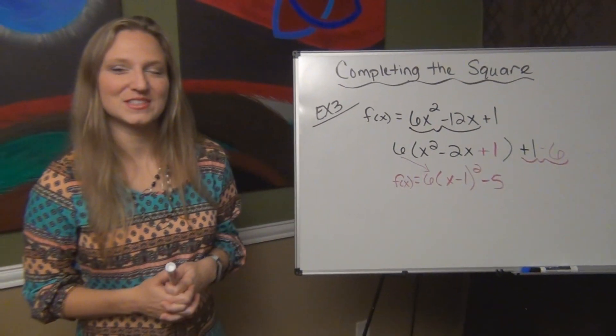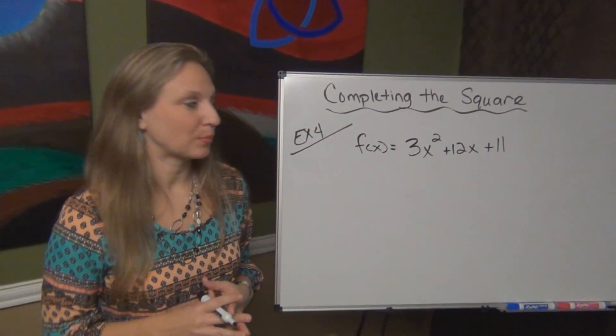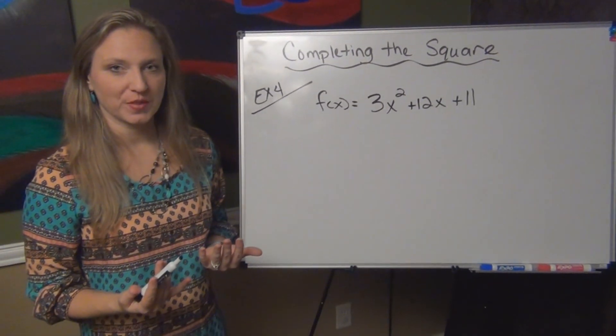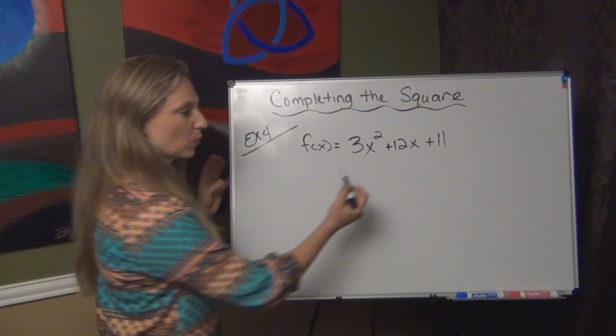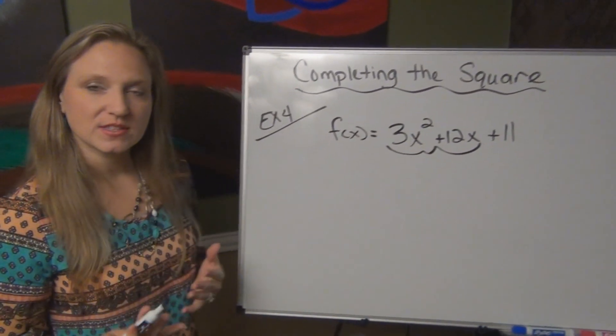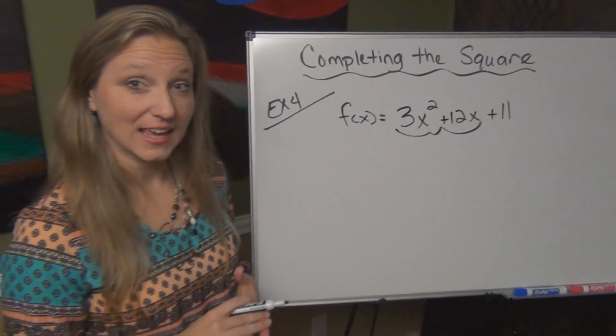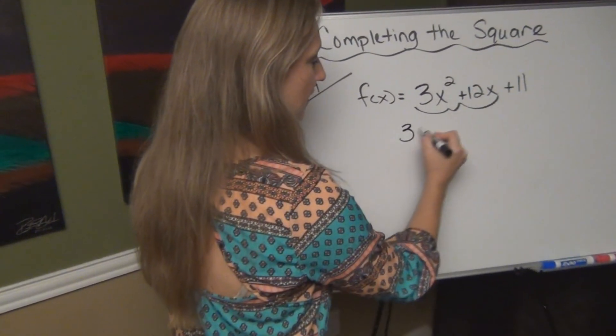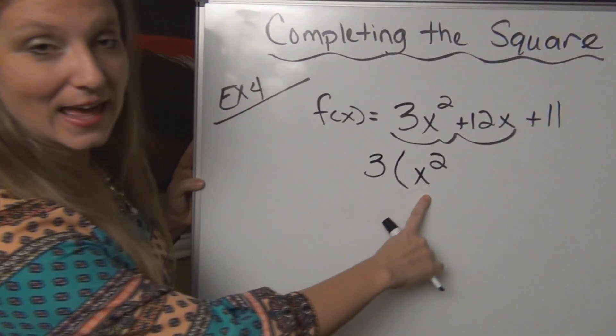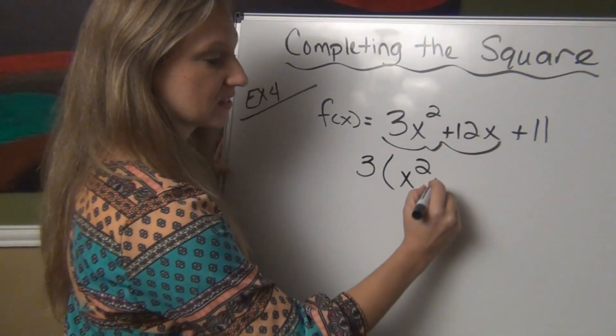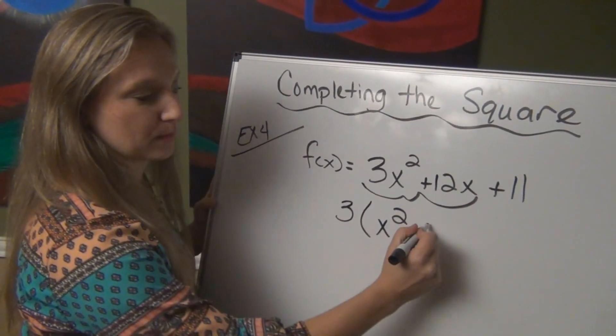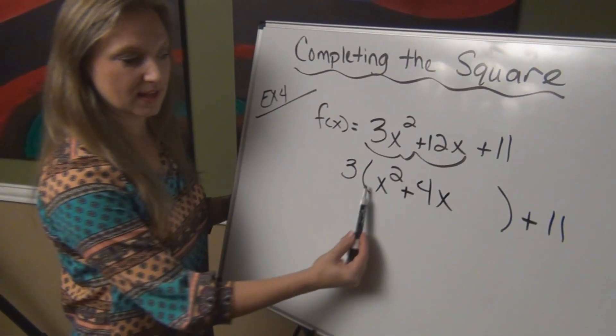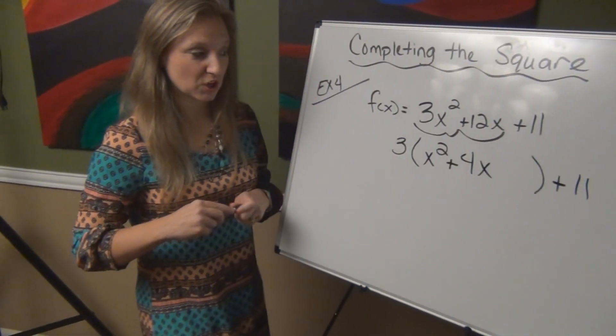All right, this is our last example. So again, I just want to do one more example where our a was not 1 so that we can practice what to do with that number. So again, what we want to do is look at these first two terms and notice that there's a GCF, a greatest common factor that we can take out of those two numbers. I can take a 3 out of both of them. So I'm going to bump that 3 out. That way, I'm just left with a plain x squared so that I'm going to be able to complete this square. If I divide 12 by 3, I'm left with 4 and I'm going to bump that 11 outside the parentheses. This piece right here is going to be the perfect square that I'm going to create.